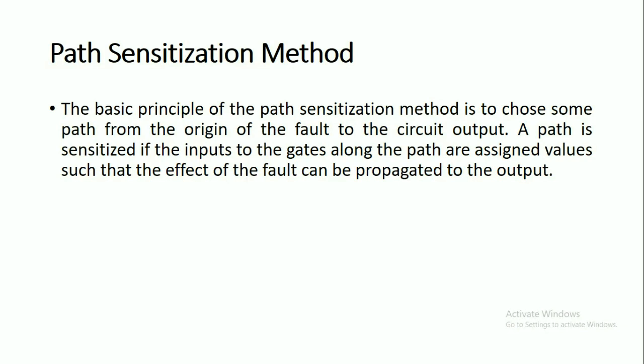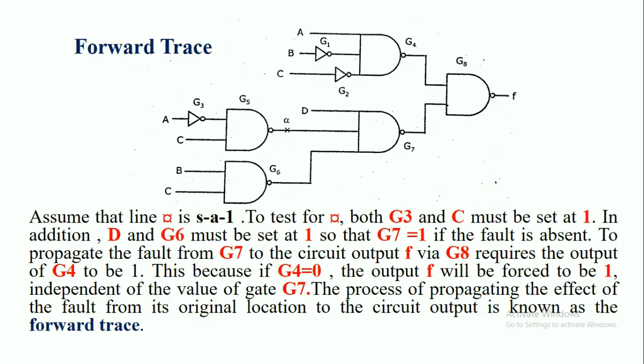We have to assign inputs to the gates such that the fault will be propagated to that output. In this path sensitization method there are two methods: the forward trace and the backward trace. Let us discuss about the forward trace first.